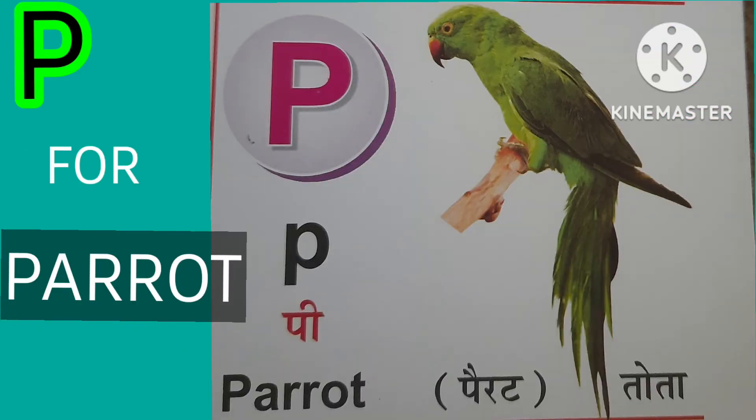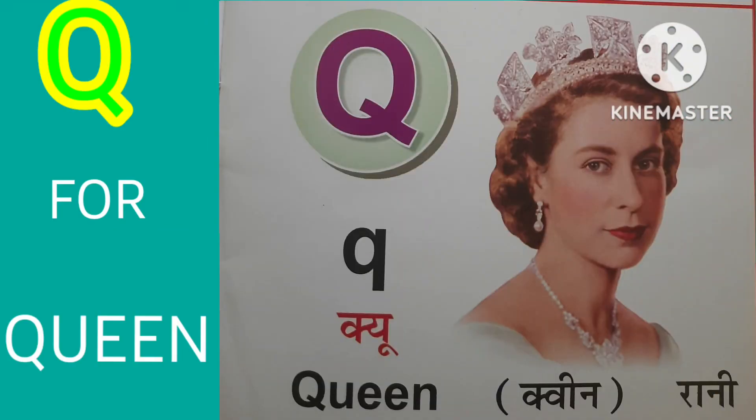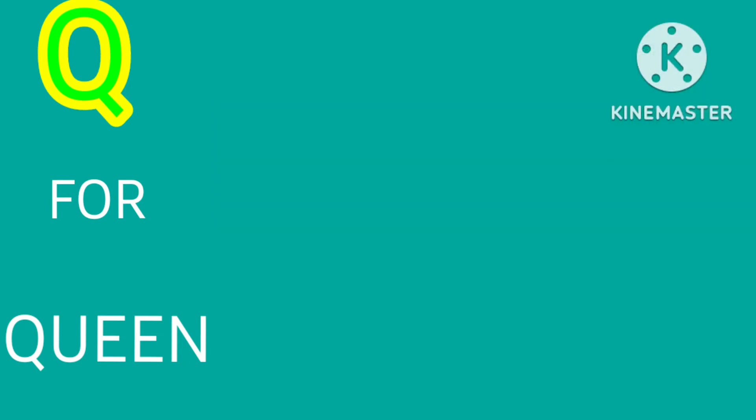Orange matlab santhra. P for parrot. Parrot means tohta. Q for queen. Queen means rani.